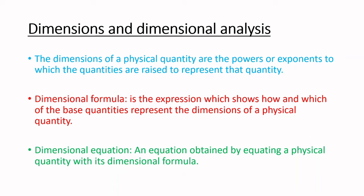Usually in mechanics we have three base quantities: mass, length, and time. When we take electricity, current is used as a dimensional physical quantity. And in thermodynamics and thermal properties, when we study temperature, we take it as a physical quantity which has dimension.